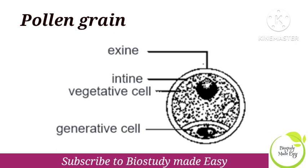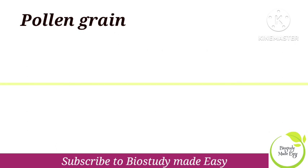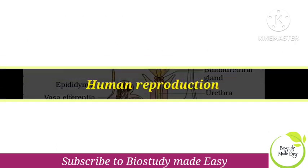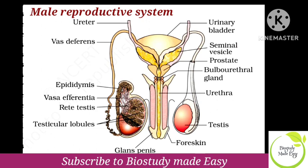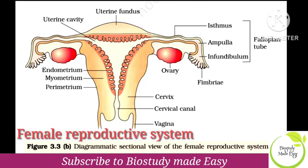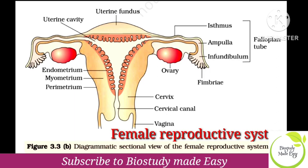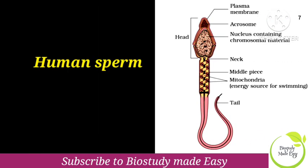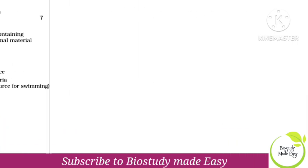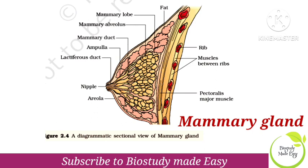Next chapter is the Human Reproduction chapter. Human Reproduction chapter is also a very important chapter for your diagram. In the first place, male reproductive system and female reproductive system — these two are compulsory diagrams. You can see the human sperm diagram and the mammary gland diagram.